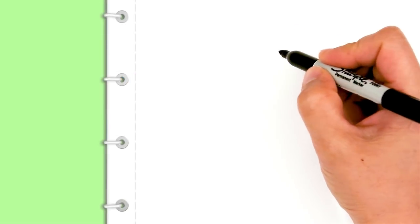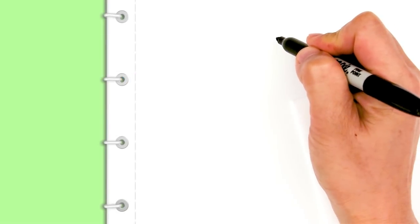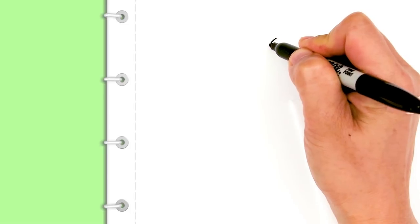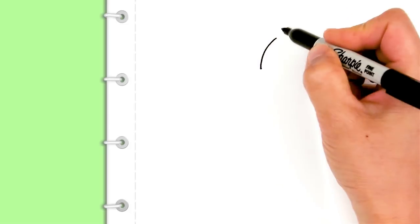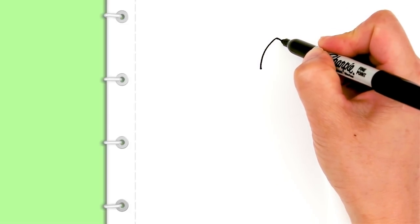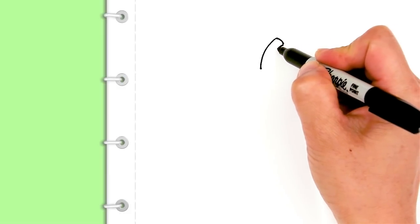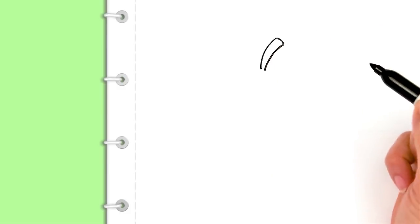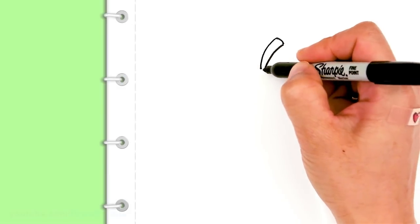To draw this yummy peach we're going to first start by drawing the stem. So right here I'm just going to bring down a curve and I'm going to connect it right here and another curve and then bring it together at the bottom.